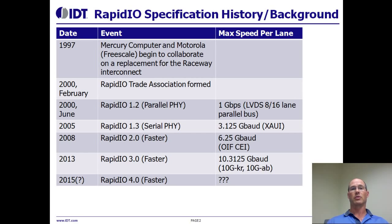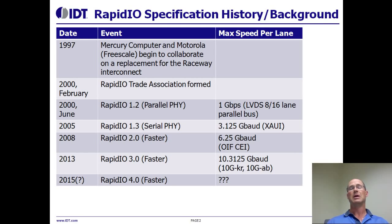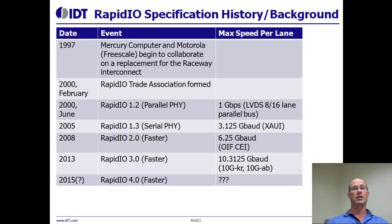RapidIO is also used largely in military compute, so high-performance mobile compute, as well as industrial control and medical imaging. You find that RapidIO excels wherever there are size, weight and power constraints. The latest example of that is that RapidIO was selected by NASA and a number of other companies as the next generation space interconnect. If RapidIO can meet the size, weight and power constraints of space, I'm sure it's ideal for your application.